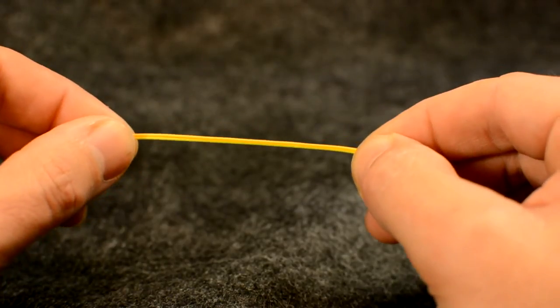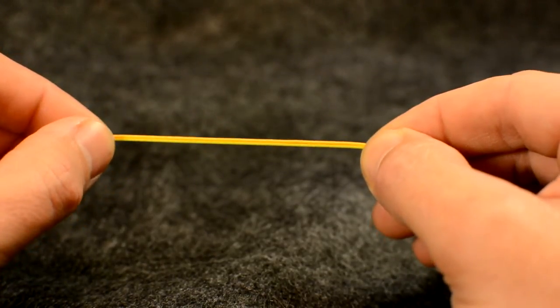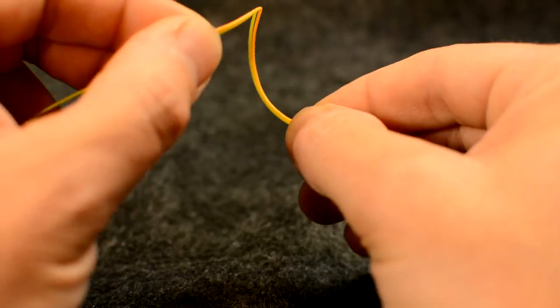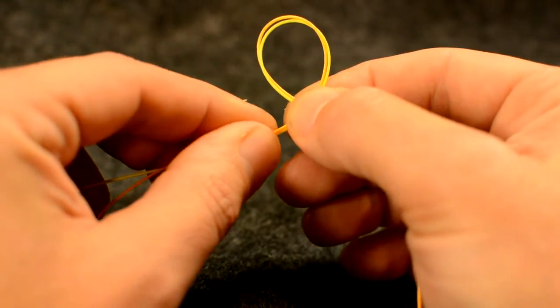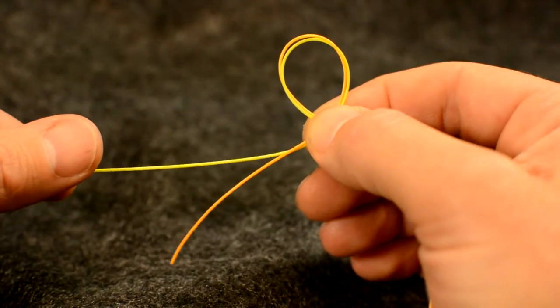Now make an overhand loop, bringing the tippet side or yellow line in front of the leader. Pinch the loop between the thumb and forefinger of your right hand.